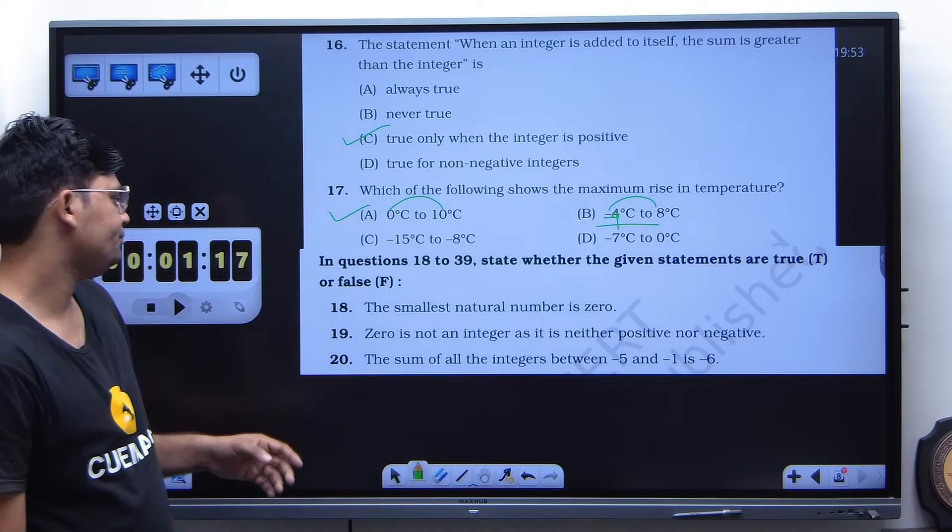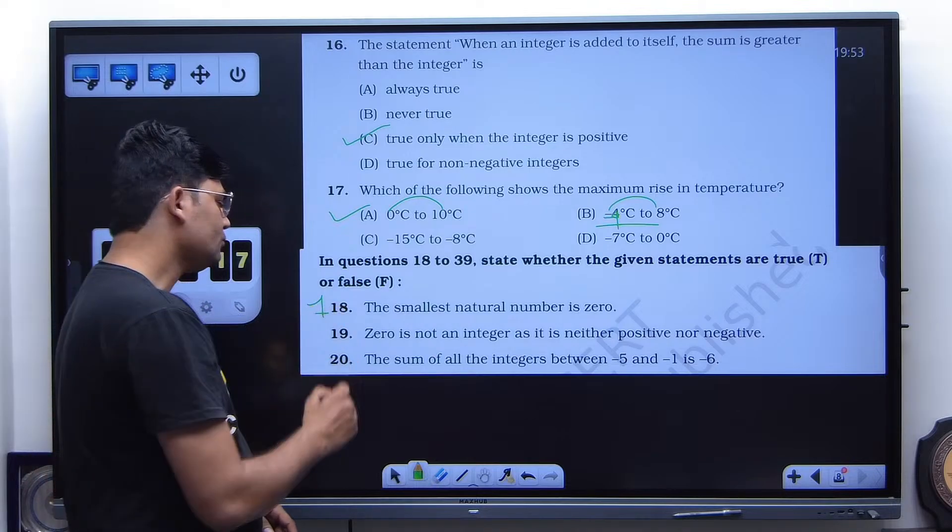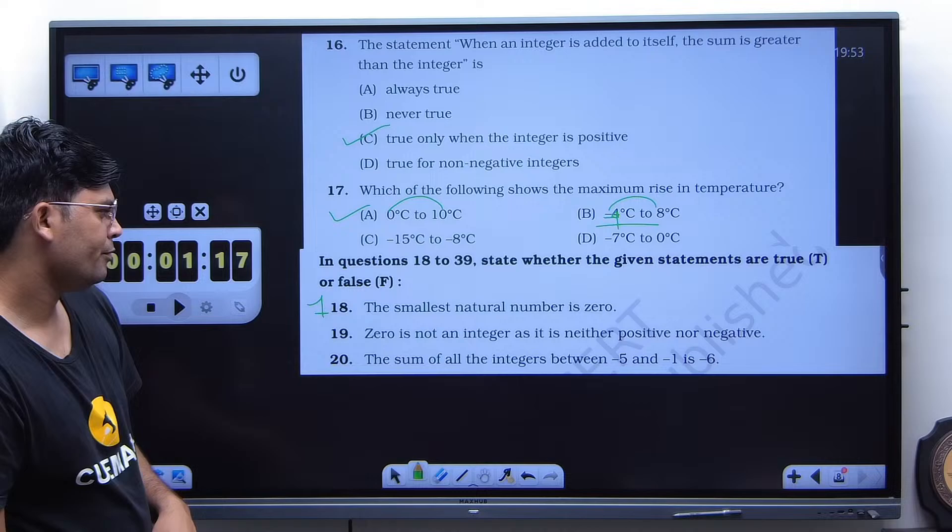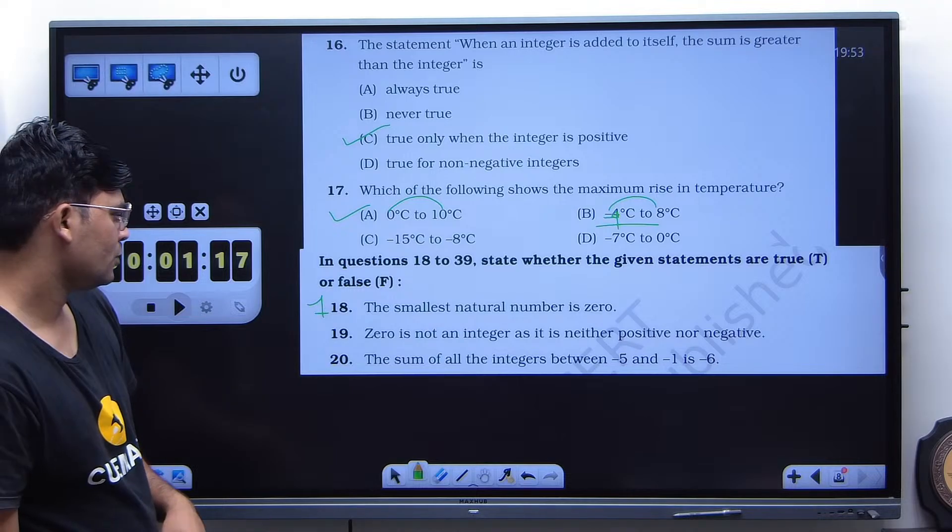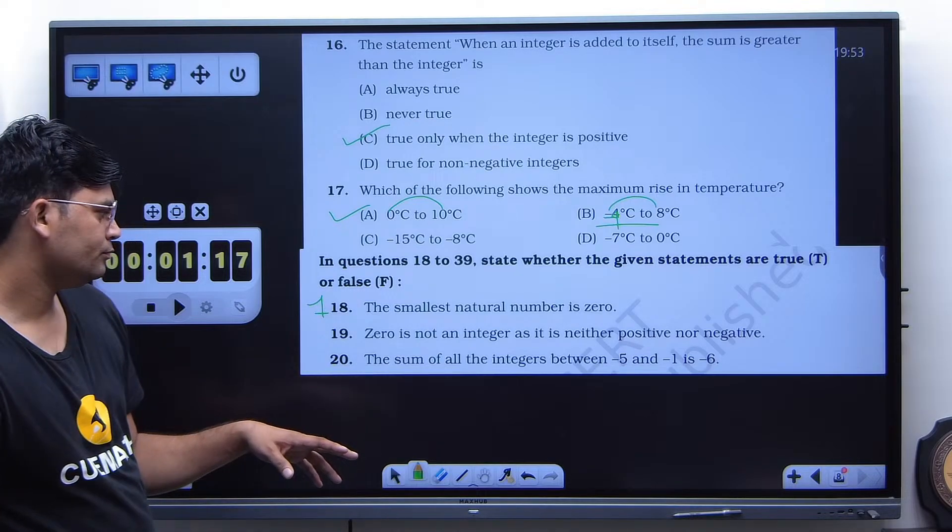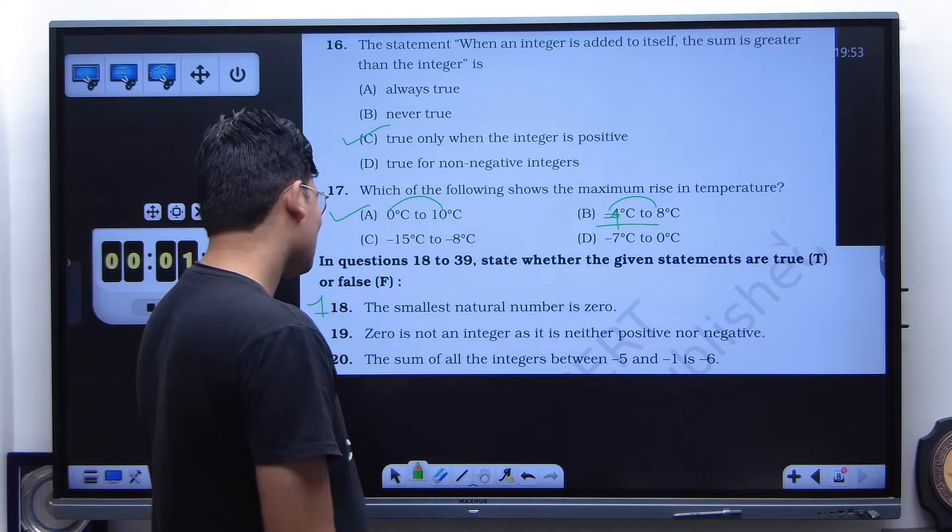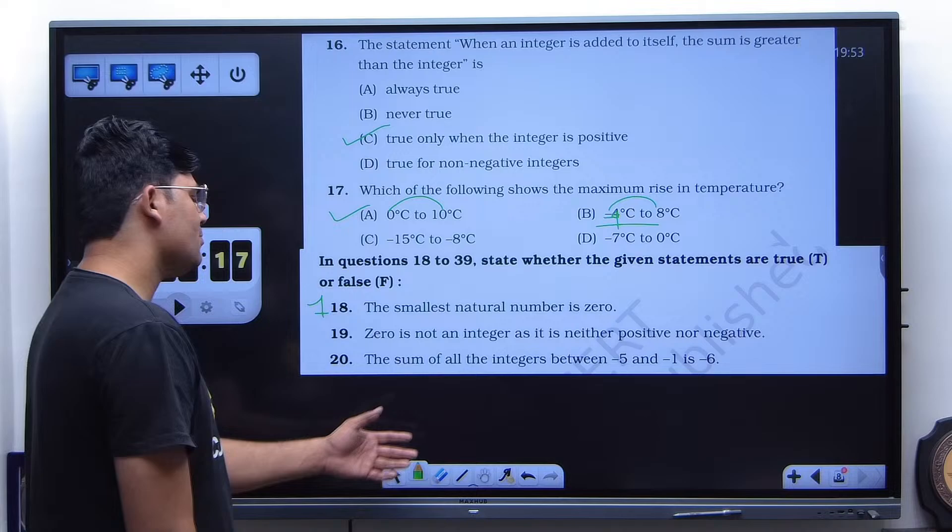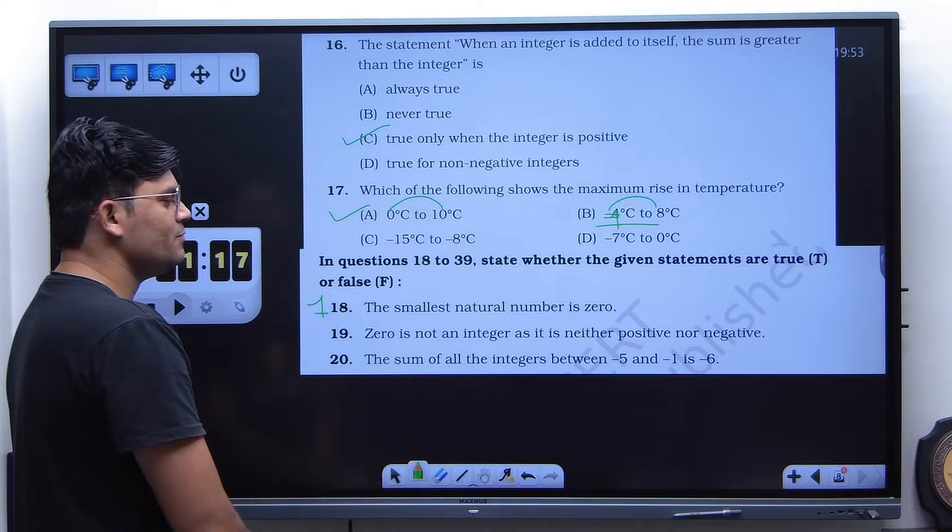Second one is false. And third one is false. I think all of them are false, like 18, 19, 20.